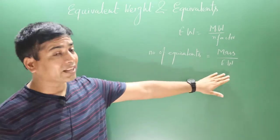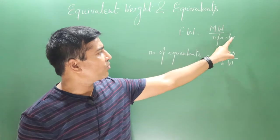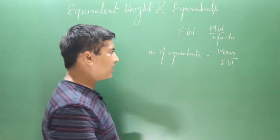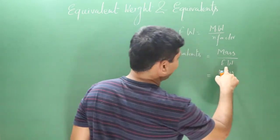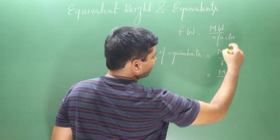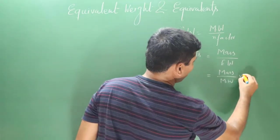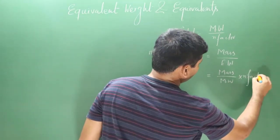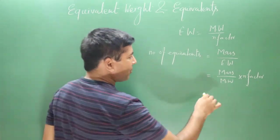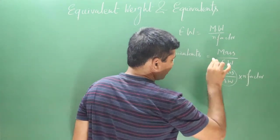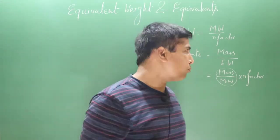We can simplify this formula. Since equivalent weight equals molecular weight divided by n-factor, we can plug that in. So we have mass divided by (molecular weight / n-factor), which means n-factor goes to the numerator. Mass divided by molecular weight multiplied by n-factor.